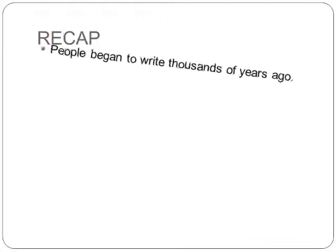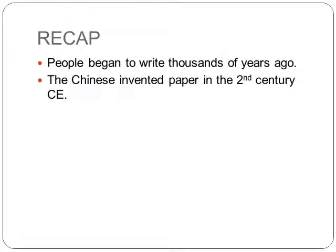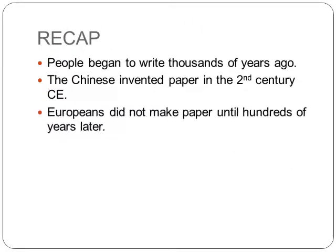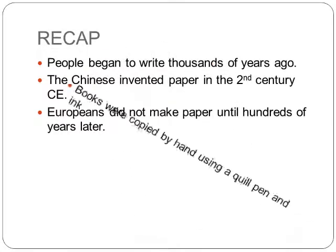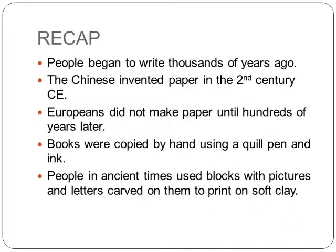Now let's have a throwback at what we have learned in this chapter up till now. The people began to write thousands of years ago. The Chinese invented paper in the 2nd century CE. Europeans did not make paper until hundreds of years later. Books were copied by hand using a quill pen and ink. People in ancient times used blocks with pictures and letters carved on them to print on soft clay.